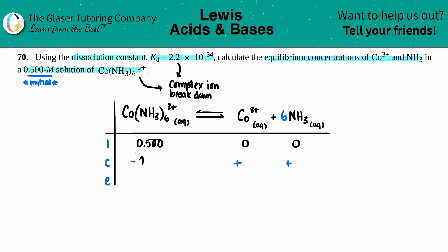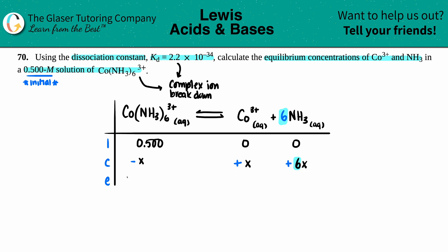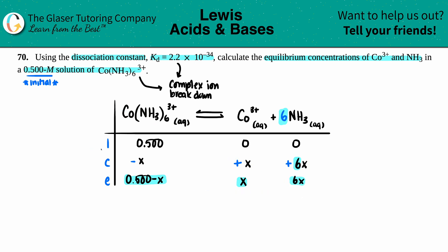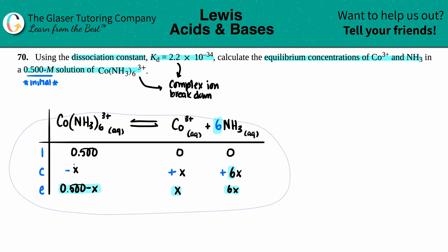Co³⁺ has a coefficient of one, so its change is plus x. NH₃ has a coefficient of six, so its change is plus 6x. For the Equilibrium row, the complex ion is 0.500 minus x, Co³⁺ is just x, and NH₃ is 6x. These equilibrium values go into our dissociation formula.